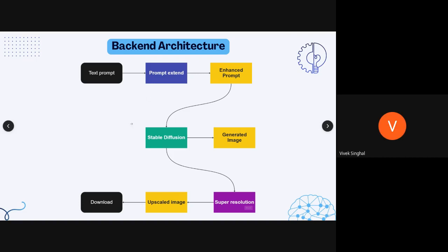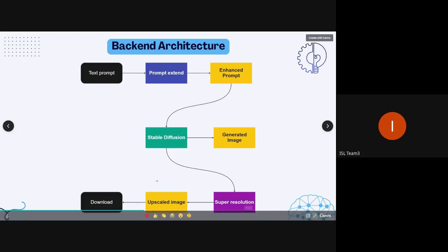Super resolution is also optional. The generated image from Stable Diffusion has a maximum resolution of 768x768. If you want HD resolution of 1280x760 or higher, you can do 2x or 4x upscaling.